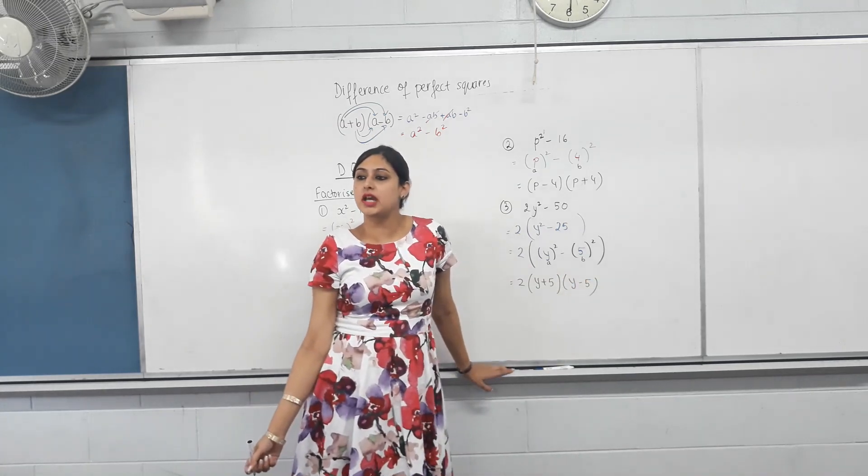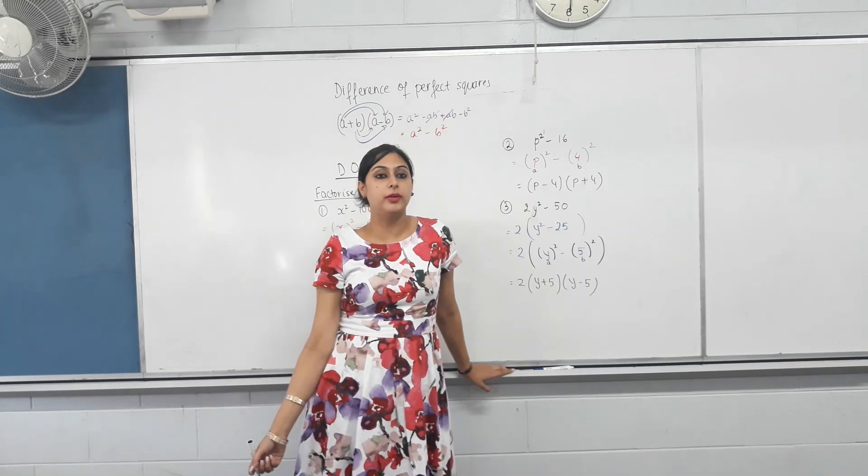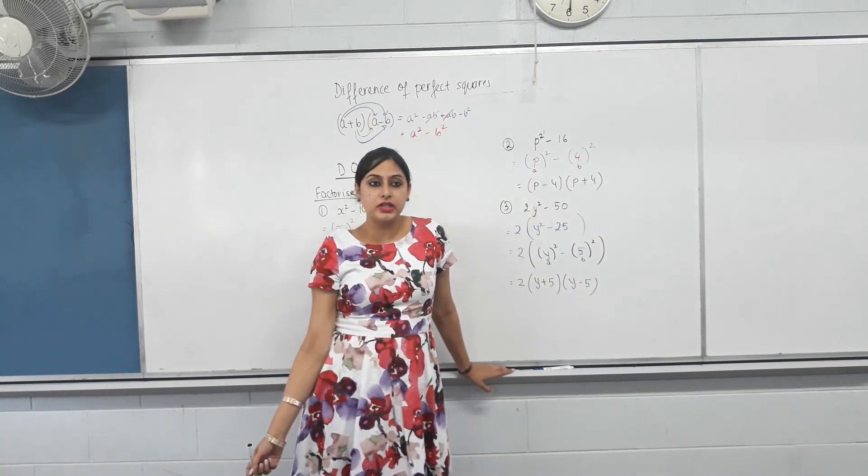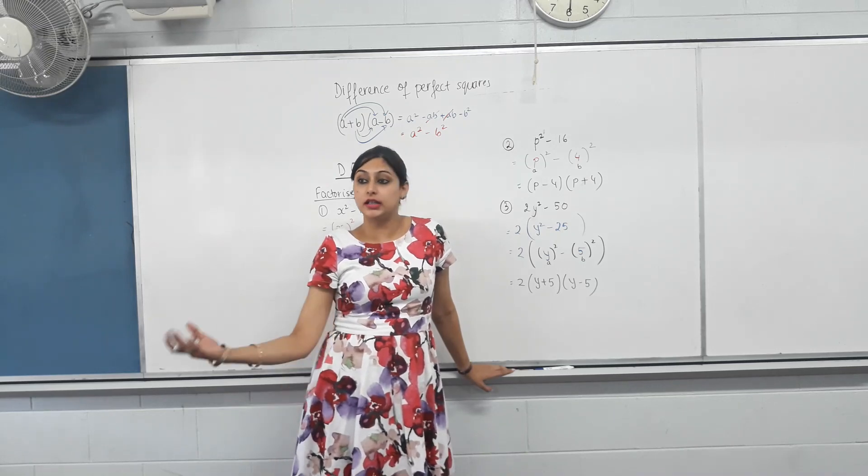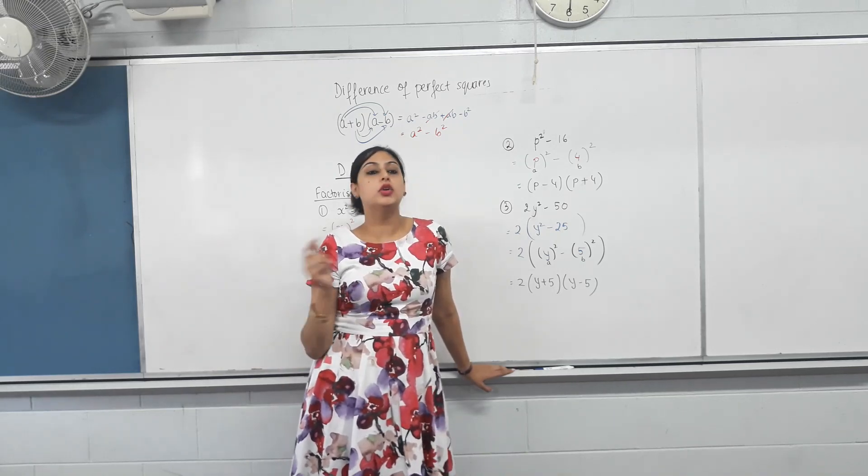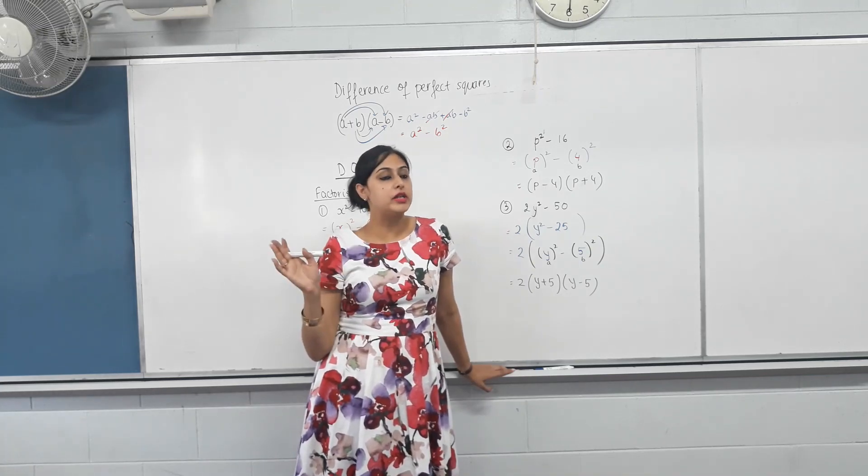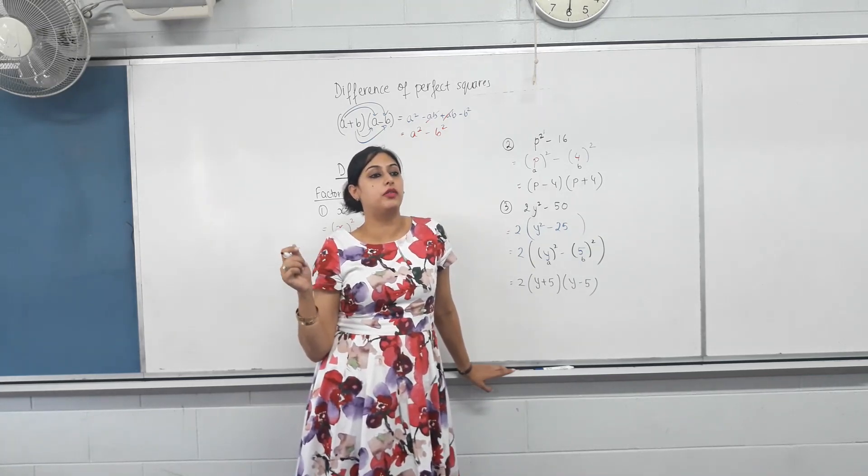DOPS stands for difference of perfect squares. Every time you see a perfect square and another perfect square with a minus sign, you should use DOPS. Is that clear? Yeah. That's it for factorization. We've covered all different types of factorization.